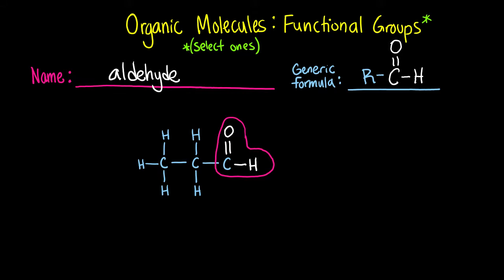It looks similar to the next functional group called a carboxylic acid. A carboxylic acid appears to be a combination of an alcohol and an aldehyde, but it's not. It is its own functional group that is called a carboxylic acid because this hydrogen at the end can be ionized off, making it a weak acid.